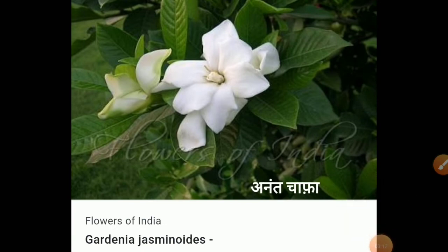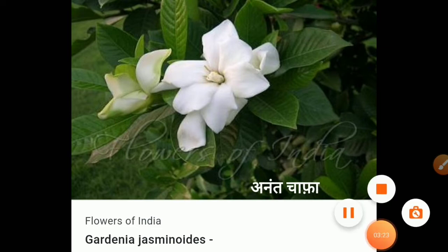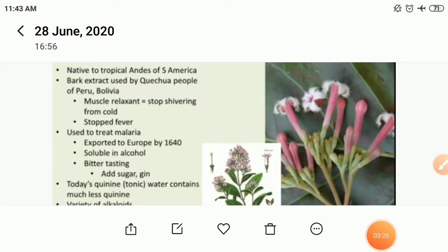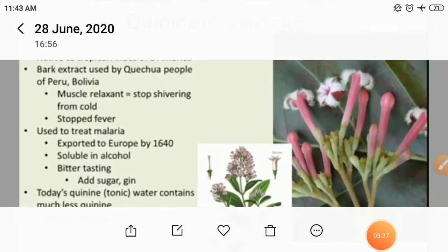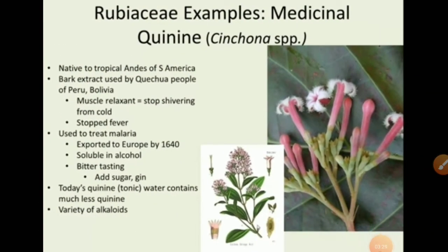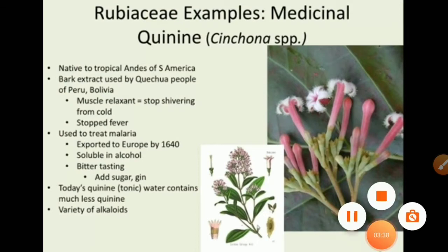This is Gardenia jasminoides, your Ananta Saurabha plant, belonging to the family Rubiaceae. This is the Cinchona plant, the quinine-yielding plant. The medicine obtained from this plant is used for malarial treatment.